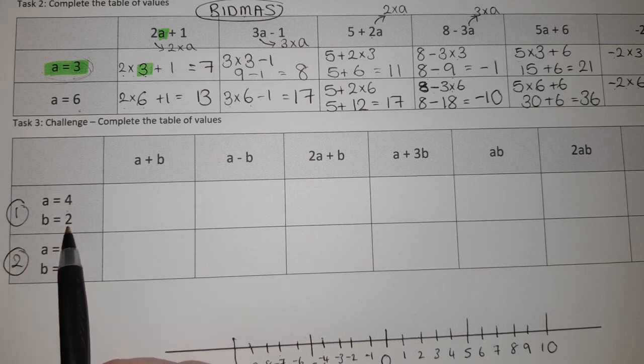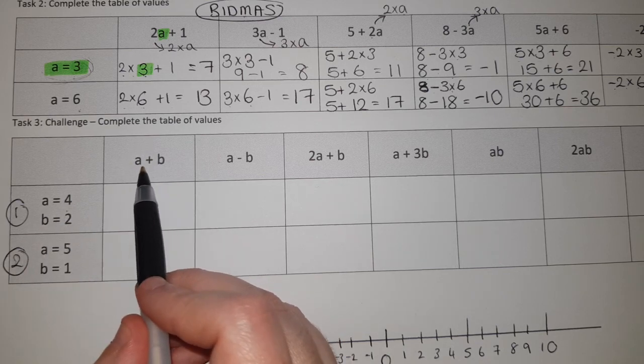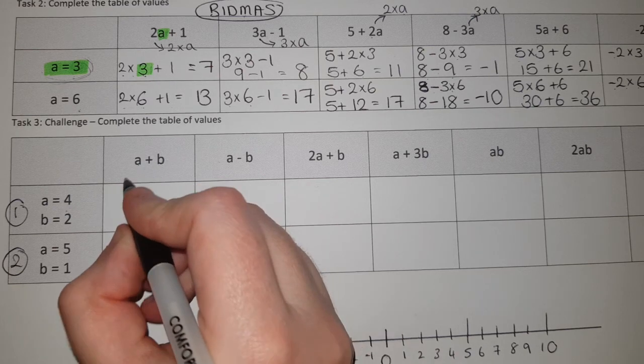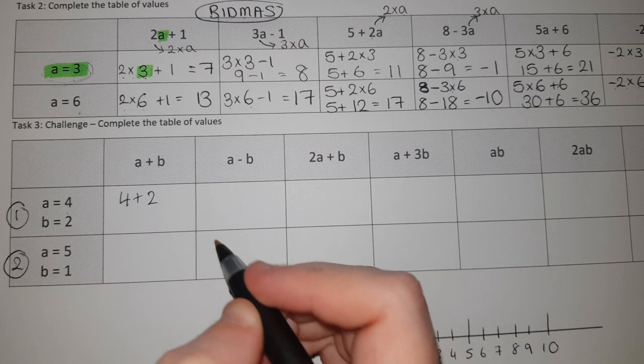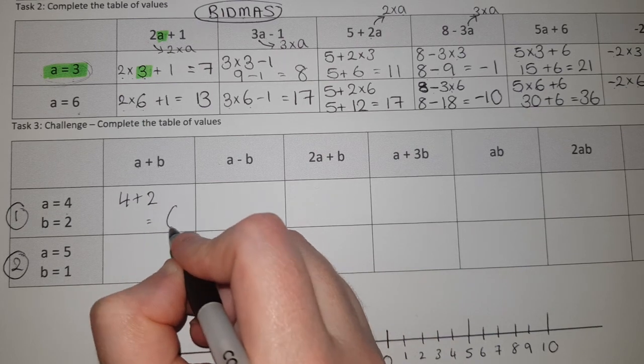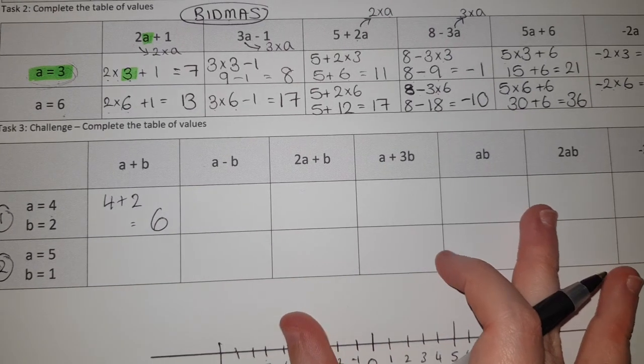So instead of saying A plus B, it's now going to be - A becomes four, B becomes two - I get four add two equals six. And that's it, first one done.